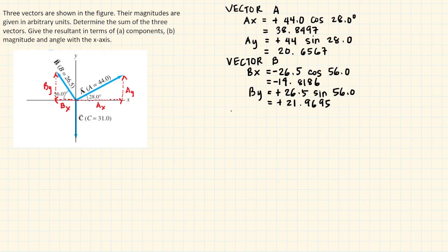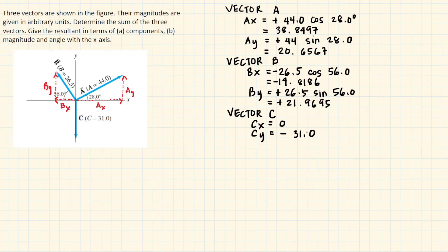Finally, for vector C — this vector is purely downward, meaning there is no component in the horizontal direction. So C sub x is equal to zero. C sub y is negative 31.0, since the vector is directed downward and whatever the magnitude is, the full component acts in the negative y direction.